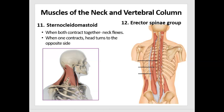Now let's look at some muscles of the neck. The sternocleidomastoid helps us turn our head and bend our head towards our chest. It is located from the mastoid process to the sternum and the clavicle — that's how it gets its name. When both contract, you can bend your head forward and the neck flexes. When one contracts, the head turns to the opposite side. So here the skeleton is looking towards his left, meaning the right sternocleidomastoid contracted.